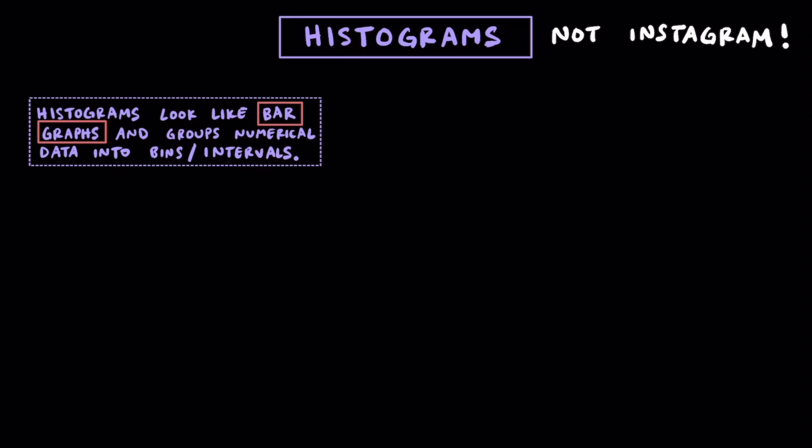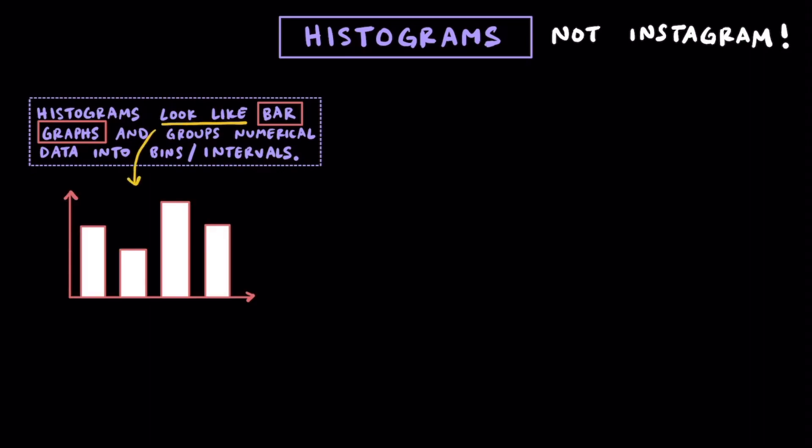Now, histograms look like bar graphs and group numerical data into bins and intervals. Histograms look like bar graphs and basically just group numerical data or data that consists of numbers into these intervals or so-called bins.